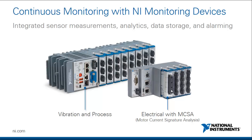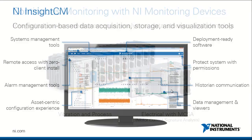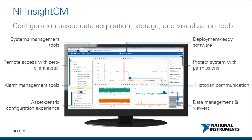The NI monitoring devices, which you can see on the screen here, have been designed to do the sensor data acquisition, the raw time waveform data analytics, data storage, as well as the alarming capabilities. NI has designed a few different systems that have IO specific to different types of assets — everything from vibration and process type measurements, to being able to monitor three-phase AC induction electric motors with motor current signature analysis. These devices then communicate to the Insight CM server software, which we can see on the screen here. This server-based software gives us the ability to configure our systems, to be able to store this data, and ultimately, to be able to visualize it.